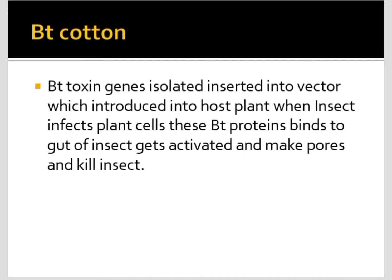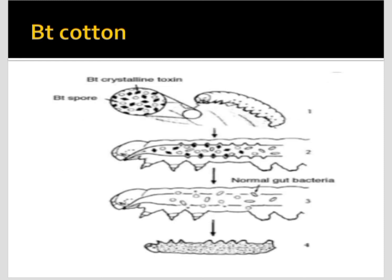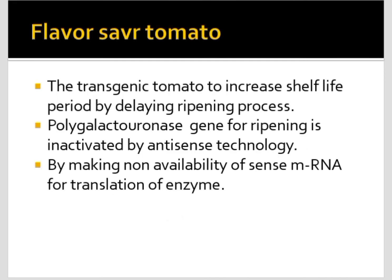Bt cotton plants are infected by insects which damage them. Bt toxins are produced by the bacteria Bacillus thuringiensis, which produces cry proteins against insects without using insecticides, reducing chemical use. These Bt toxin genes are inactive in the host plant and in the bacteria, but become activated in the presence of alkaline pH found in the insect gut. The Bt toxin genes are isolated and inserted into a vector, which is then introduced into the host plant.